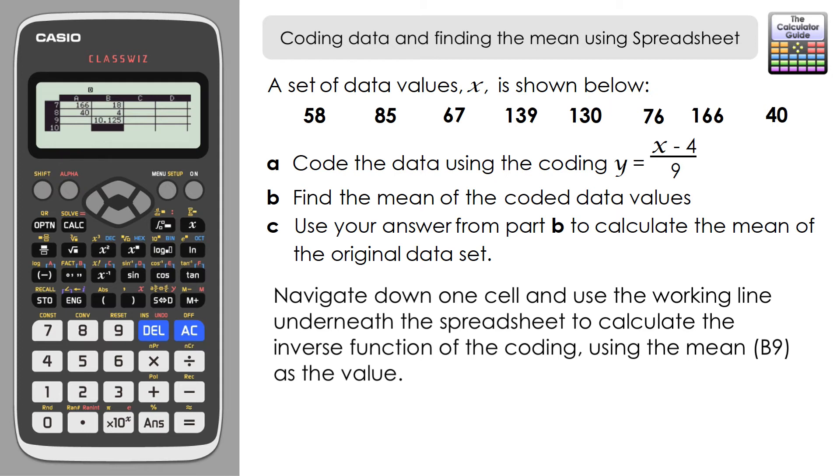To use the coded mean value, I need to basically inverse the code. The coding had us subtract four from our value and then divide by nine, so we're going to have to do the inverse of that, which is multiply by nine and then add four to our value.